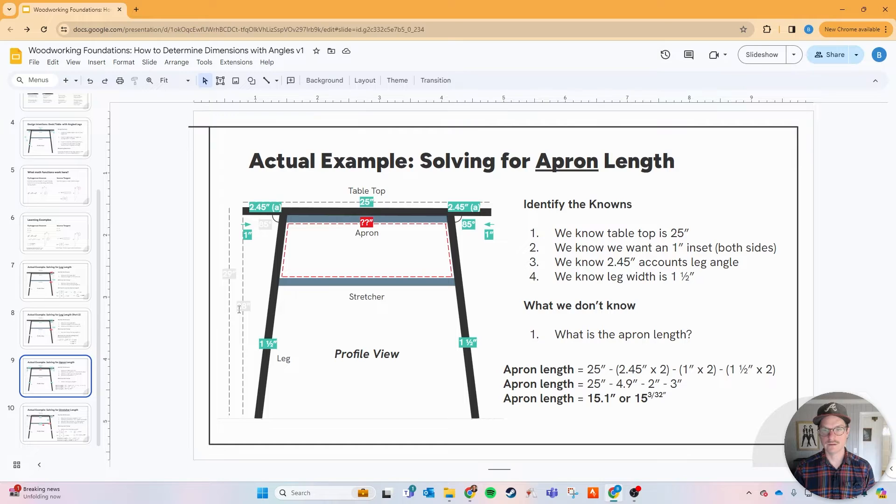Now that we know the leg length, how do we actually understand what is the apron distance? Remember we're trying to get a one inch inset on both sides. Let's work with the knowns that we have here. We know the tabletop is 25 inches in depth. We know we want to inset an inch on both sides. We know now that the 2.45 inches accounts for the leg angle of the 85 degrees, and we also know the leg width is one and a half inches.